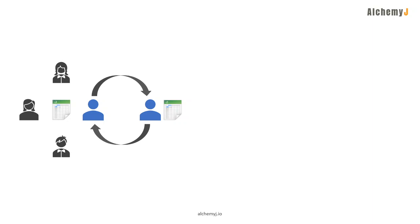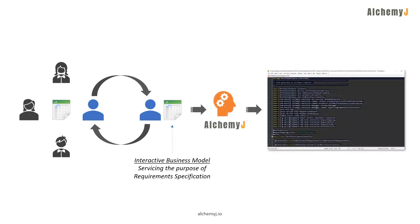Unlike traditional requirement specification, the model in Excel spreadsheet is an interactive specification in which functionality could be tried and verified by users. Then your analysts can take the model to AlchemyJ, which can implement the API that realizes the requirements.